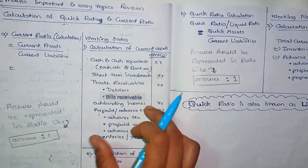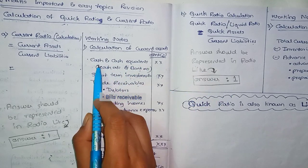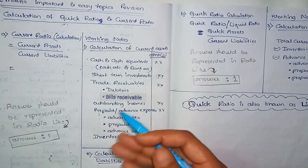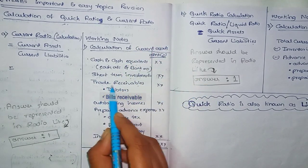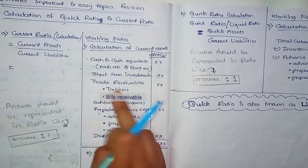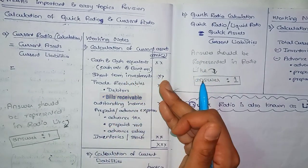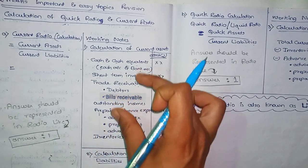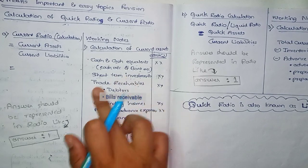Let's add items starting with cash and bank — we pay for valuable things using total cash and cash equivalents. The short-term investment is also a current asset. Trade receivables are also the same — that includes debtors and bills receivables. These trade receivables will be given to you in the question.